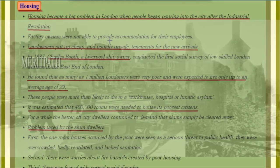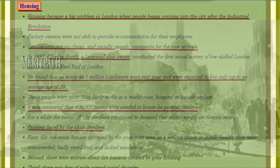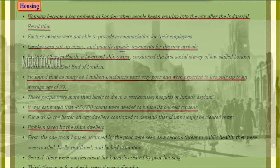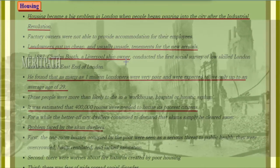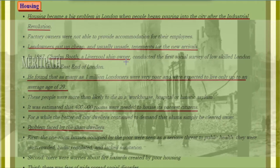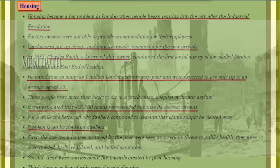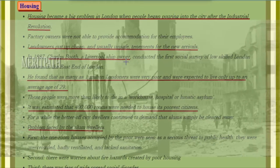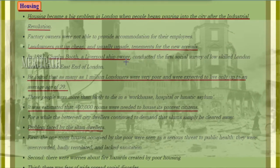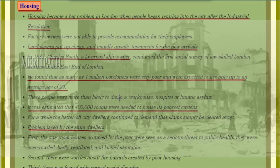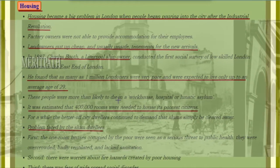Factory owners were not able to provide accommodation for their employees. Landowners put up cheap and unsafe tenements for the new arrivals. In 1887, Charles Booth, a Liverpool ship owner, conducted the first social survey of low-skilled London workers in the East End of London. He found that as many as 1 million Londoners were very poor and were expected to live only up to an average age of 29. These people were more likely to die in a workhouse, a hospital, or a lunatic asylum.